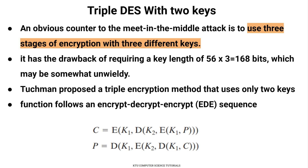The next version is Triple DES, also called 3DES. 3DES uses either 2 keys or 3 keys. It uses 3 stages of encryption with different keys. With 3 different keys, the key length is 56 times 3, which equals 168 bits.